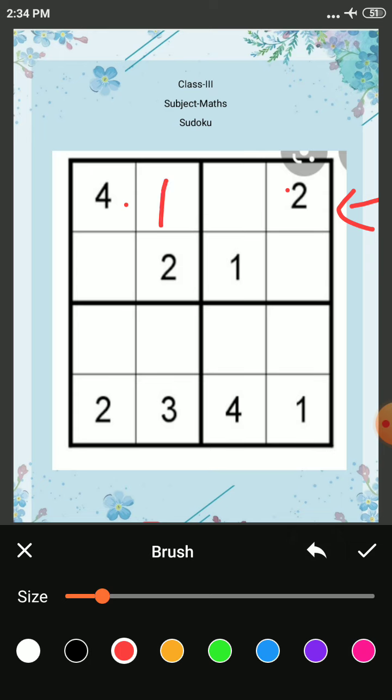Now take this column. This is 3, 1, 4. So which number is missing? 2. So we will write 2 here.